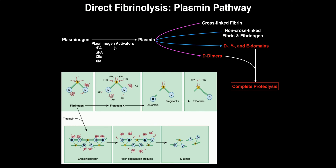We have what are called plasminogen activators — factors that we find in the blood for the most part that are going to activate plasminogen into plasmin. We have tissue plasminogen activator, or tPA. We also have uPA, sometimes called urokinase — the urokinase-type plasminogen activator — which performs a similar function as tPA.